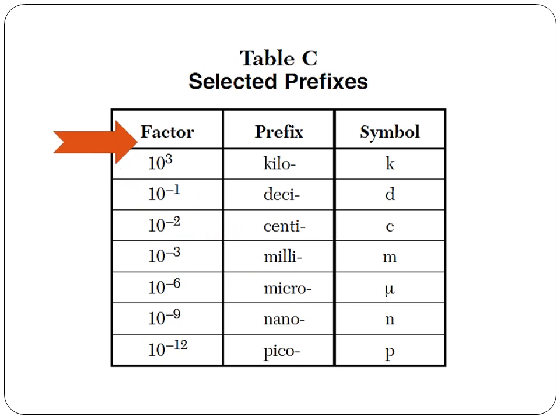The factor in the first column represents the number of base units equal to that particular prefix. For example, 10 to the third base units equals 1 kilo. 10 to the minus 1 base units equals 1 deci. 10 to the minus 2 base units equals 1 centi, and so on. If we take a look at 1 centimeter, then 1 centimeter is 10 to the minus 2 meters or 100 centimeters equals 1 meter.